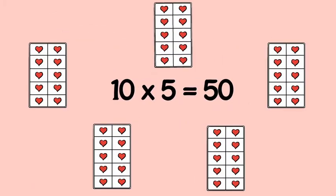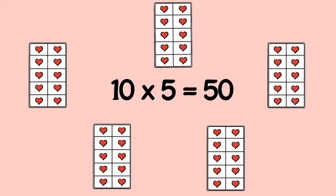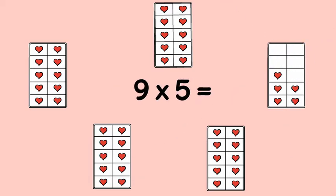9 × 5. Start with 10 × 5. 10 × 5 is 50. Take away one group of 5. So 9 × 5 is 45.